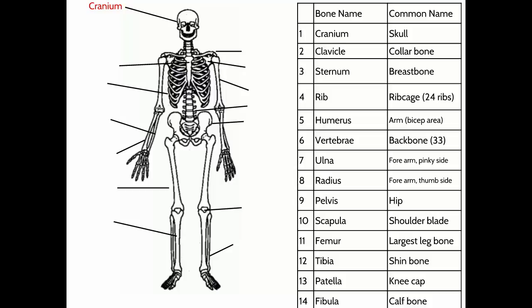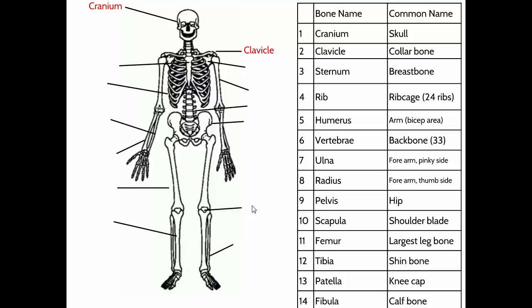The collarbone — this is one that people often fracture. My daughter broke her collarbone two years ago. It's commonly broken when people fall — for example, snowboarding — if you fall forward hard and land on your arms or elbows, the force can sometimes fracture your collarbone. The anatomical name for the collarbone is the clavicle.